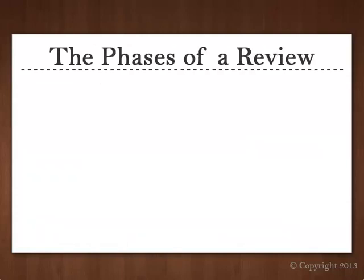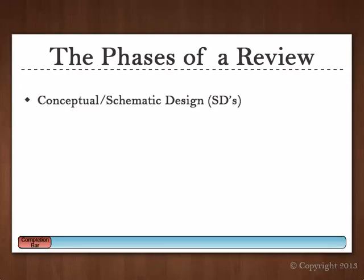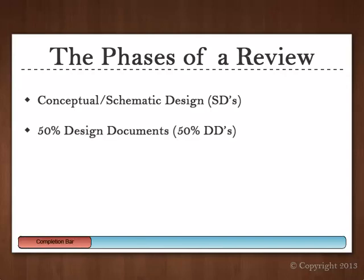Let's talk about the phases of a constructability review and what level of detail we should get into at each design milestone. Conceptual and schematic designs are often just a handful of sheets. At this stage, we are just reviewing the basic design to be sure it is feasible, and we are looking for value engineering opportunities — we may not have many comments, and they might all be VE ideas. At the 50% DD stage, we are still just making sure the design is feasible and looking for VE opportunities; again, we may not have many comments.